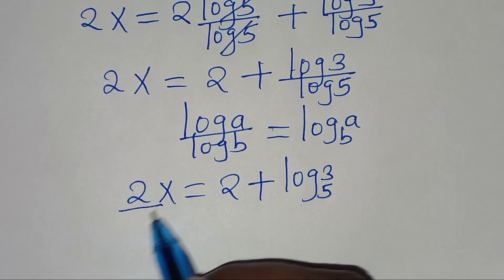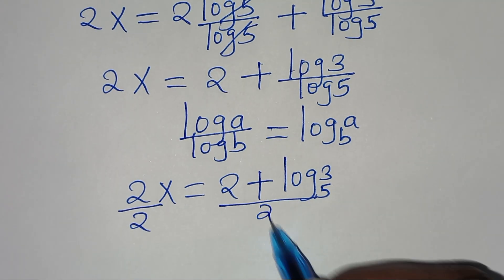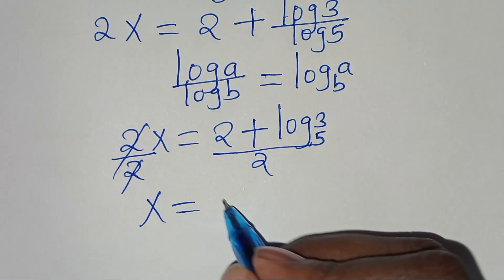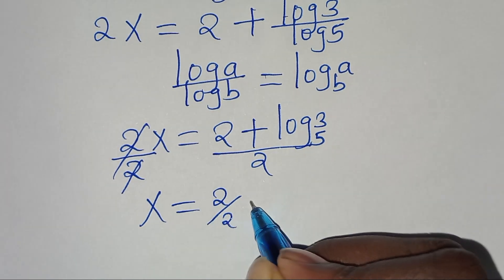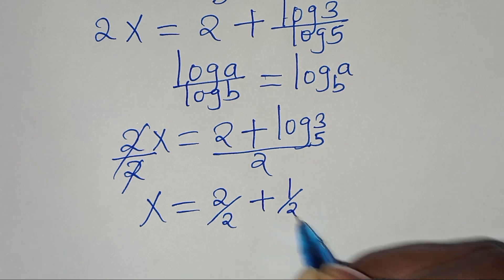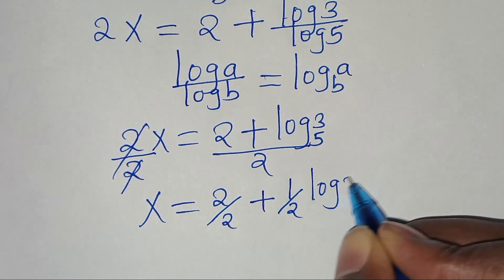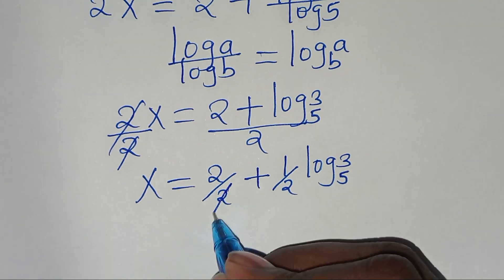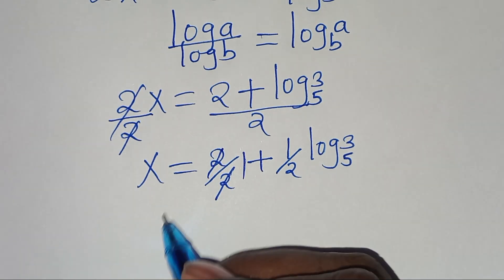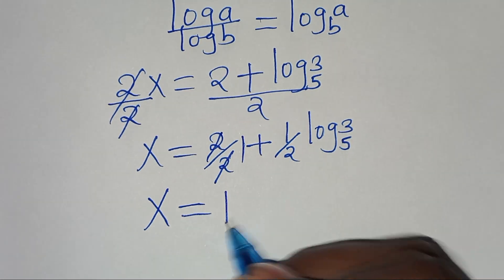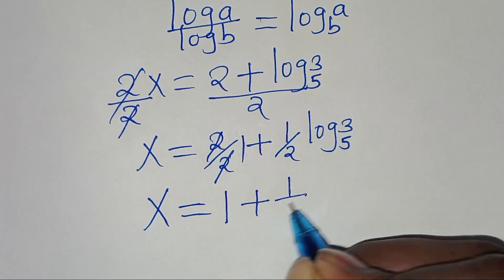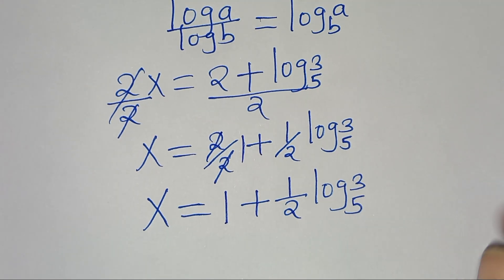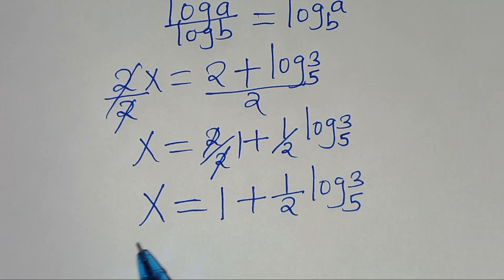Dividing both sides by 2, we get x equal to 2 over 2 plus one-half times log base 5 of 3. Simplifying, x equals 1 plus one-half log base 5 of 3. This is our value of x.